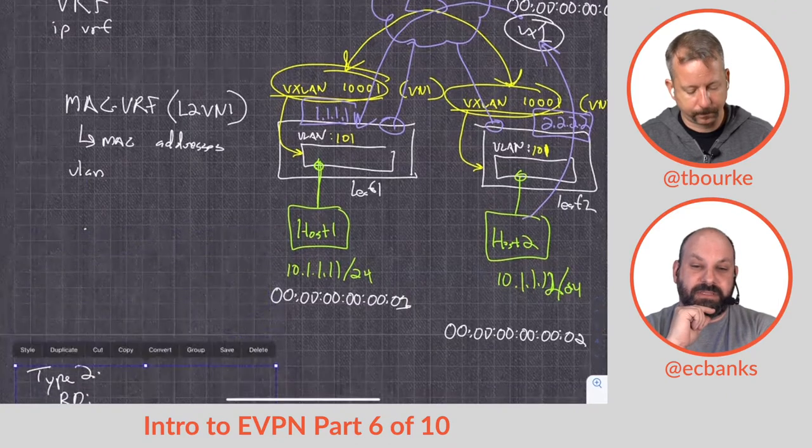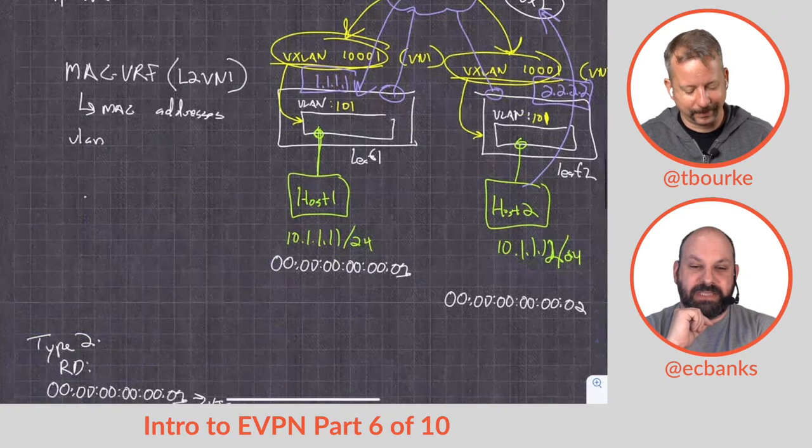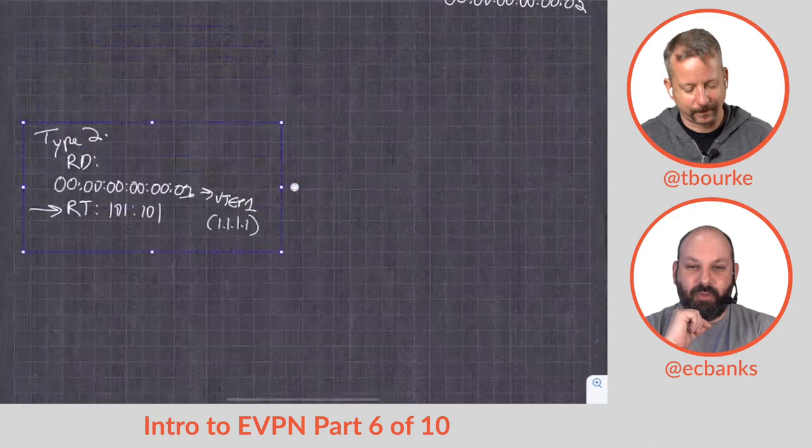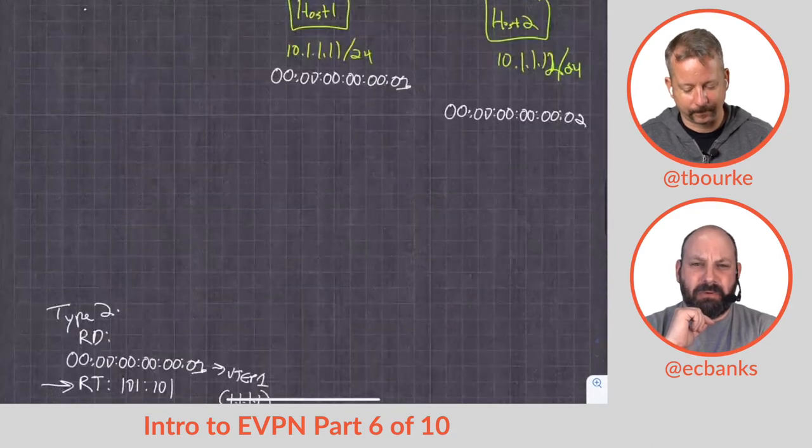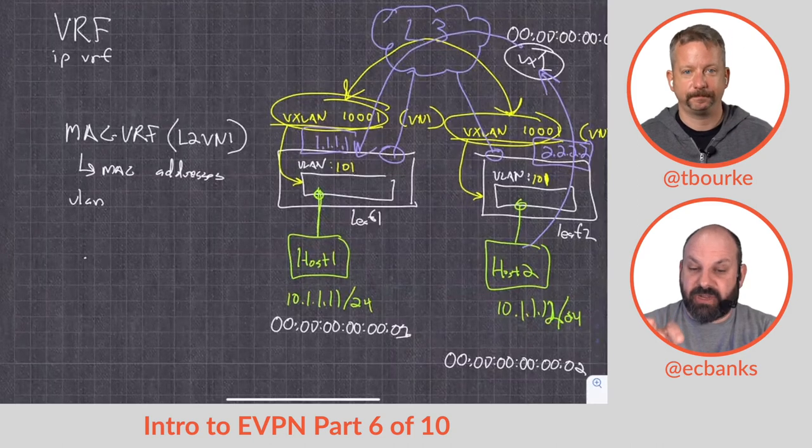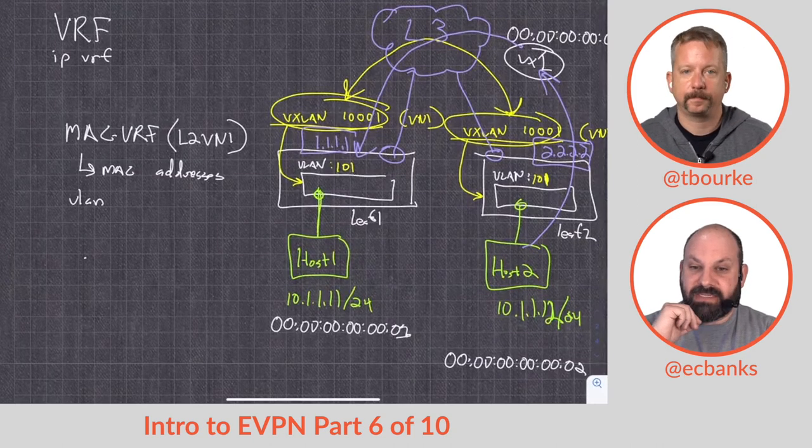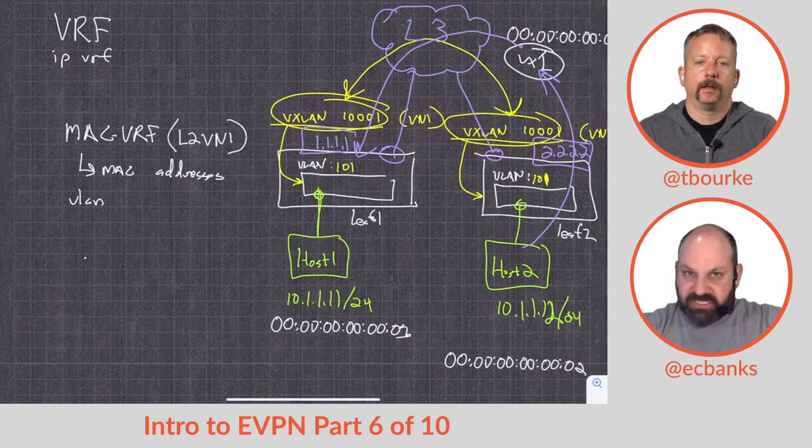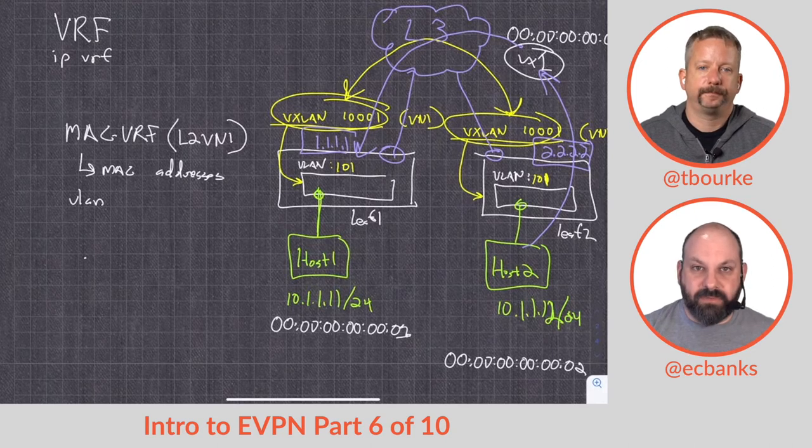You said some evil words probably 10 minutes ago—you said stretched VLAN—and a whole bunch of people watching went "ew." But that's the point of this: we are safely stretching VLANs. Can you explain why this is safer than just extending a layer 2 broadcast domain over a zillion switches?